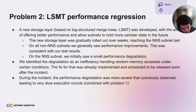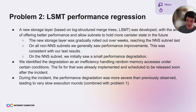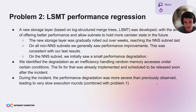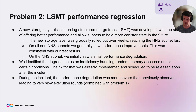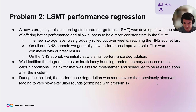The second problem was a performance regression. A new storage layer based on log-structured merge trees — called the LSMT storage layer — was being rolled out gradually over weeks. Overall results were very good across subnets with nice performance improvements. But when it last reached the NNS subnet, a performance regression was observed.